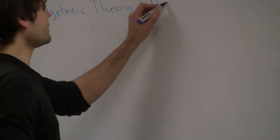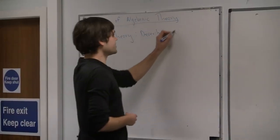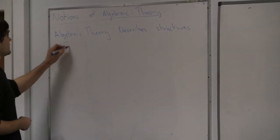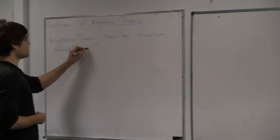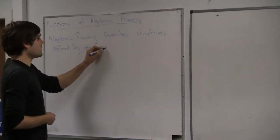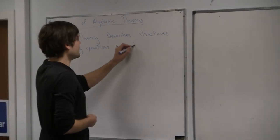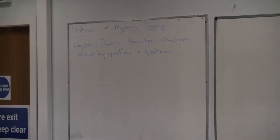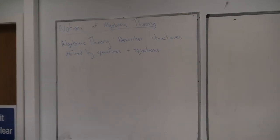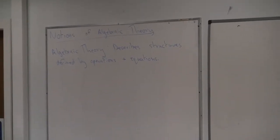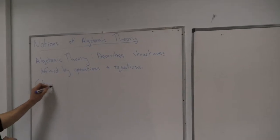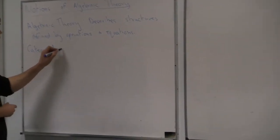It's something that describes structures — mathematical structures — that are defined by some operations and equations. There's this classical theory of universal algebra, which is literally in terms of operations and equations, but then category theorists over the years have come up with many different kinds of generalizations of this: categorical notions of algebraic theories.